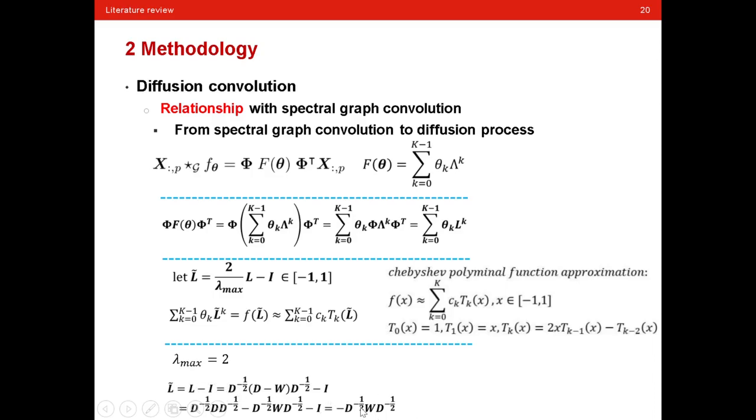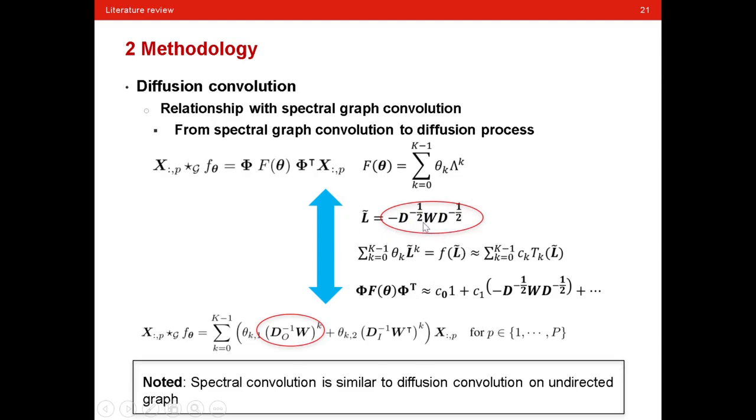And now we can see how the spectral graph convolution is similar to the diffusion convolution. This is the simplified version. Here, with the scaled graph Laplacian, the lambda part can be broken into the summation of this. And as you can see, the factor here is very similar to the diffusion process. In fact, the spectral graph convolution is similar to the diffusion convolution on undirected graph. That's to say, while the spectral graph convolution only considers the undirected graph, the diffusion convolution is similar in the undirected graph, but it can also constitute two directions. That's the advantage of diffusion convolution compared to the spectral graph convolution.